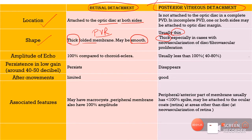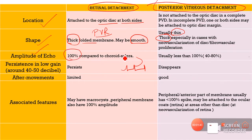Another difference is with respect to the amplitude of the echoes. As I told you in my previous videos, we are supposed to see the A-scan overlay on a B-scan image. In case of retinal detachment, we will always get a 100% spike because of the retina and sclera. However, in case of vitreous detachment, the spike we get is usually less than 100% — typically about 40 to 80%.